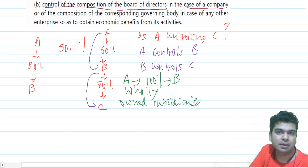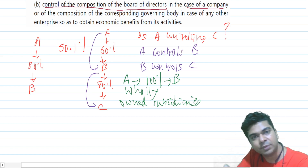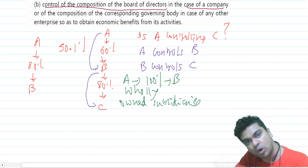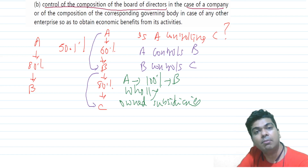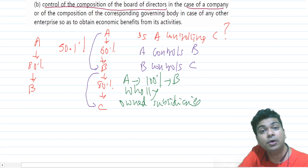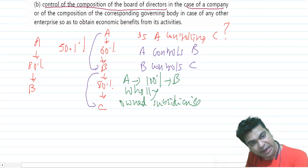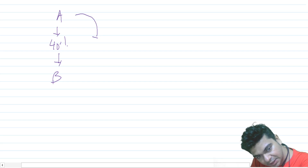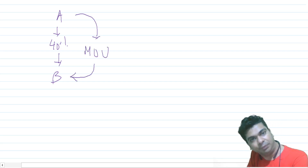A company is an artificial person and cannot take its own decisions — it is the board of directors who take decisions on behalf of the company. So if I can control the composition of the board of directors, I can control the company. Consider this scenario: company A has only 40% shares of B. Under Part A, I don't have more than one half, but suppose there is a memorandum of understanding between A and B.